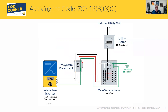The more common scenario — and we're showing a residential example here — is where you have an interactive inverter with 32 amps of continuous output current. 32 amps times 1.25 is exactly 40. With a typical 200-amp main breaker in this panel, the 200-amp main breaker on a bus bar rated for 200 amps means you don't have any extra current headroom. So the breaker for the PV system can't go at the top, can't go in the middle — it has to go at the opposite end of the bus bar. This is B32.